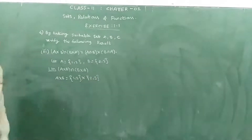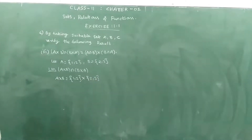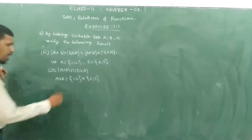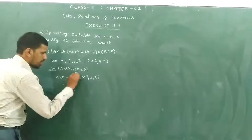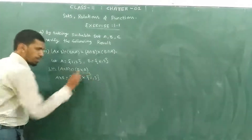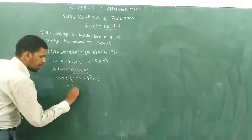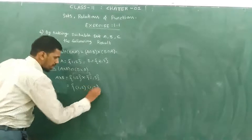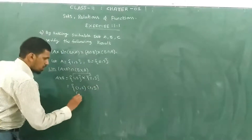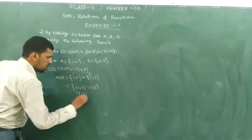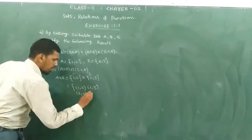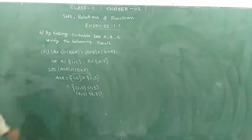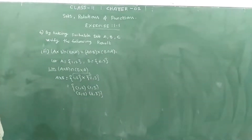We have to make the Cartesian product. So A cross B gives pairs: (1,2), (1,3), (2,2), (2,3). So A cross B is the set of these ordered pairs.